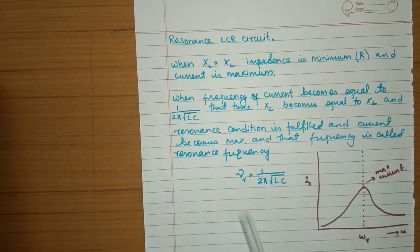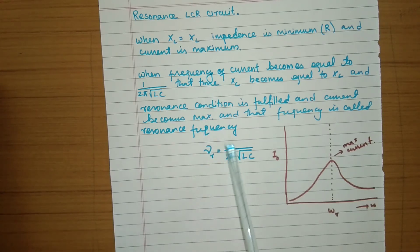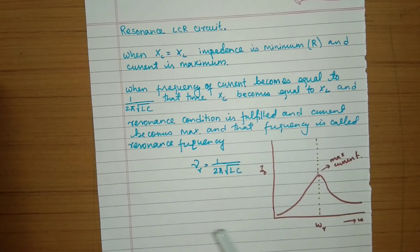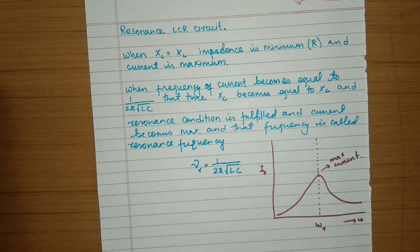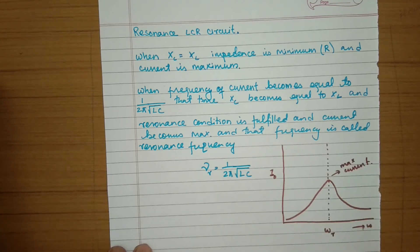The resonance frequency is given by f₀ = 1 / (2π√(LC)). At this frequency, current is maximum. When the frequency of the AC source matches the resonance frequency, X_C equals X_L and current becomes maximum — this is the resonance condition. This LCR circuit is used as a receiver in TVs and radios. This is the end of the video; check the description for another video covering the remaining topics. Please like the video and subscribe to the channel.